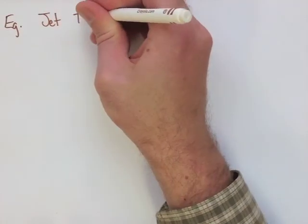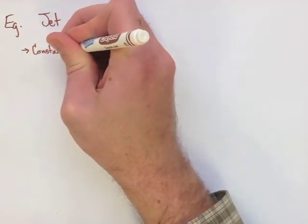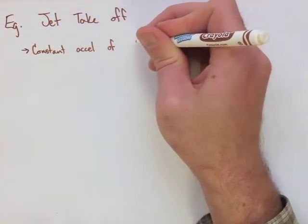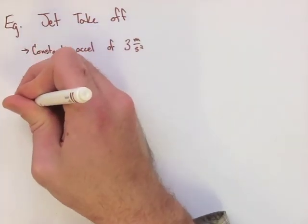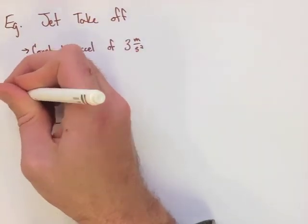Let's look at the first example where we have a jet that's taking off, and we need to find the velocity of this jet after 1 second, 2 seconds, 3 seconds, and 4 seconds. The acceleration is constant, and it's at 3 meters per second squared.